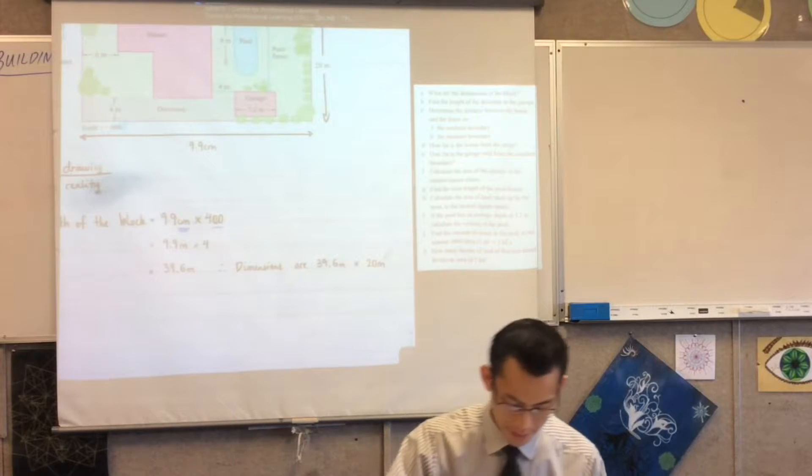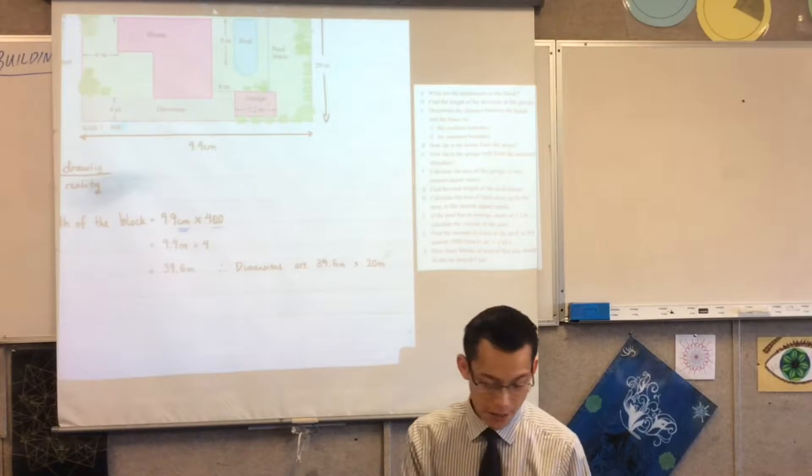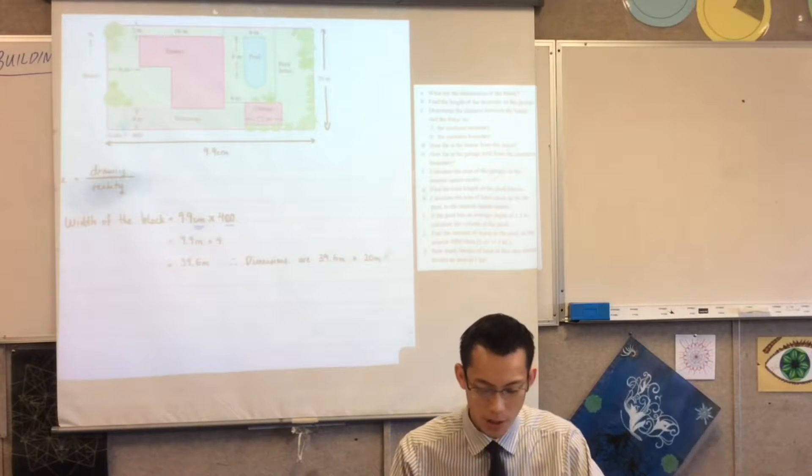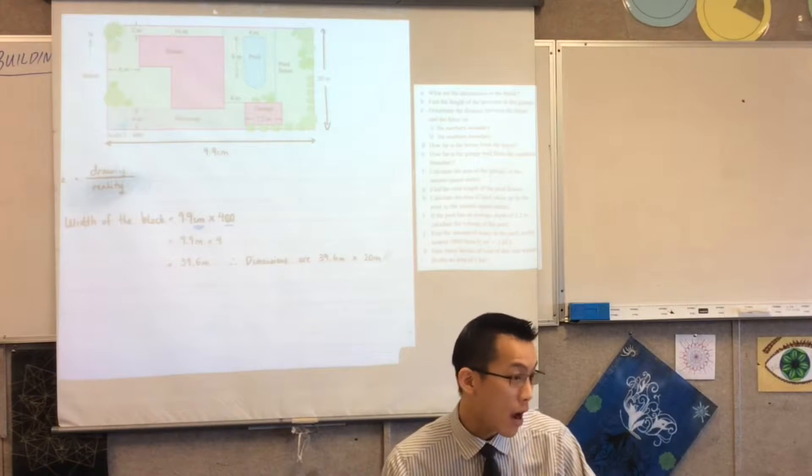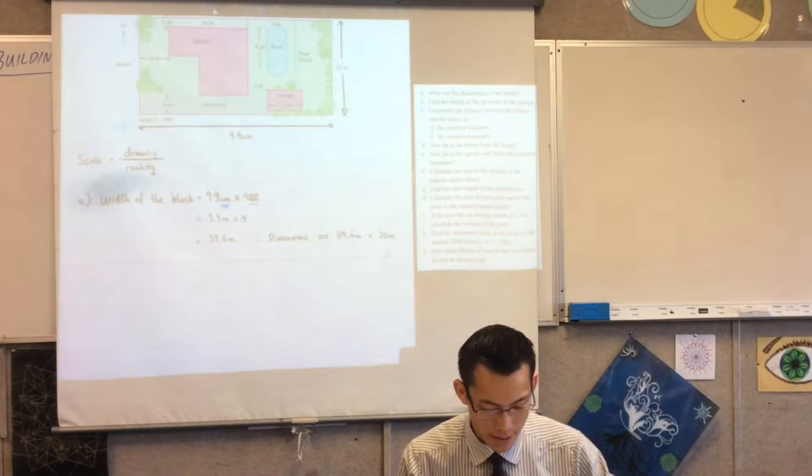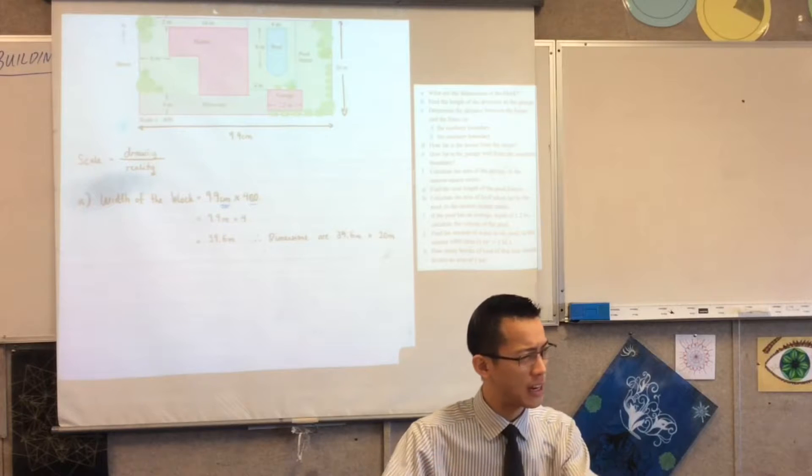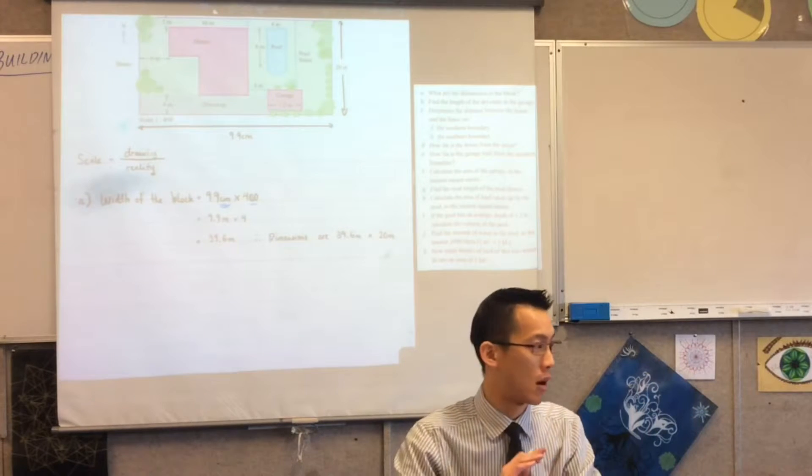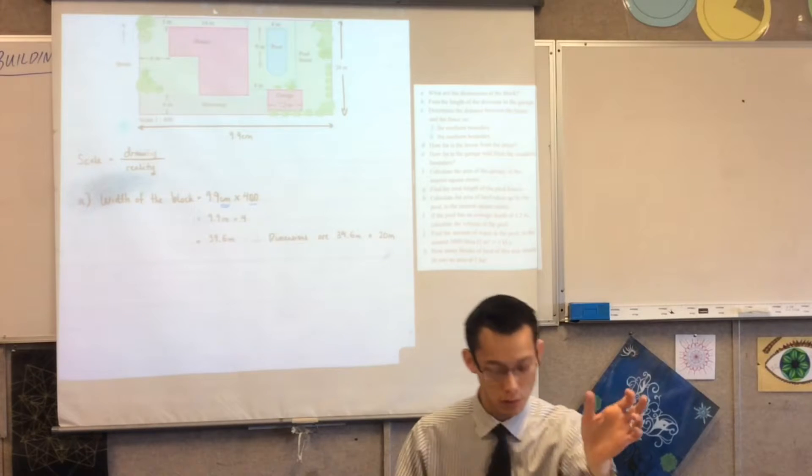Okay that's not too hard so now the next question is much in the same style. Rather than the dimensions of the block, find the length of the driveway to the garage. Again I'd like you to measure and just like we did before you want to get it in reality so you'll need to multiply whatever you measure by 400.